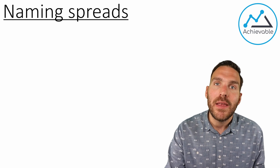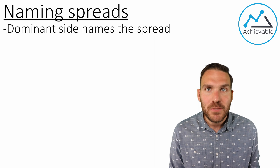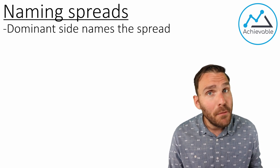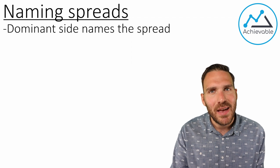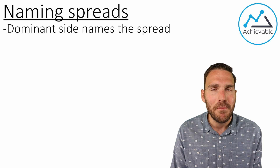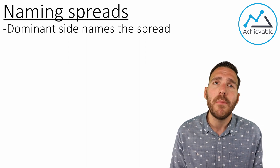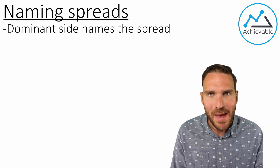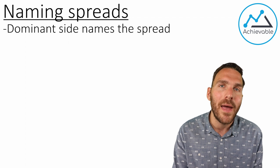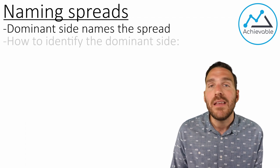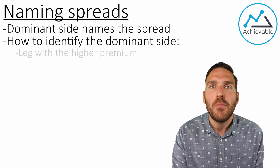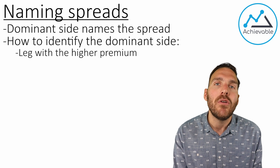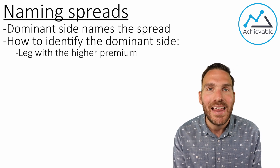Now that we have the classifications out of the way, let's talk about how to name a spread. Naming a spread is always in reference to its dominant side. Every spread has two different parts: a call spread has a long call and a short call; a put spread has a long put and a short put. One of those sides will always be considered the dominant side — the side the investor cares most about, typically because it's tied to making money. The first way to identify the dominant side is super simple: if they give you premiums on both option legs, identify which option has the higher premium — that is your dominant side.